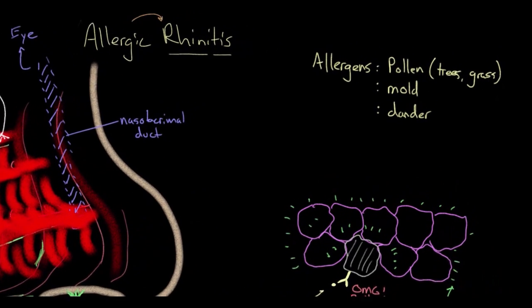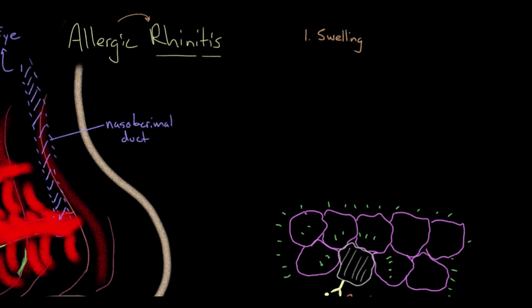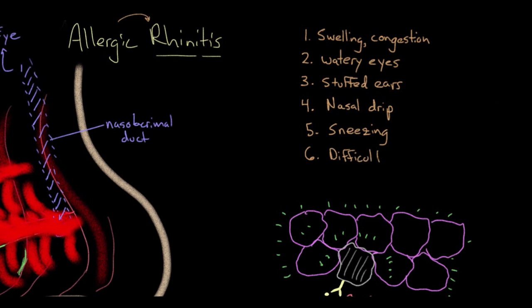And then if the swelling continues to get bigger and more pronounced, it can actually completely block off this entire nose. And when that happens, even air can't get by, and when air can't get by, breathing becomes a problem. So let's recap the symptoms: first you get swelling and congestion, if you block off the nasolacrimal duct you can get watery eyes, if you block off the eustachian tube you can get stuffed up ears, and that nasal mucosa is continually making mucus, and that causes nasal drip.